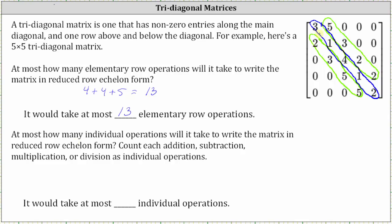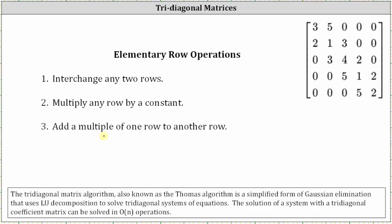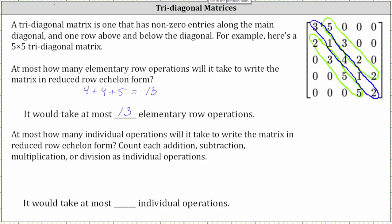For the second part, at most how many individual operations will it take to write the matrix in reduced row echelon form, counting each addition, subtraction, multiplication, or division as individual operations? Looking at elementary row operation number three — add a multiple of one row to another — this could be considered two individual operations: first, multiply a row by a constant to get a multiple, and second, add that row to another row. So getting zeros above and below the main diagonal could take up to two individual operations each.